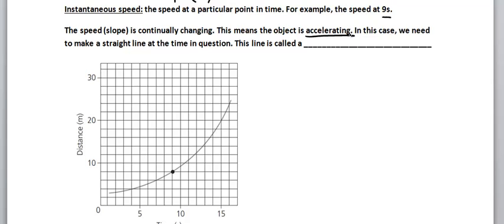Accelerating means the speed is changing. In this case, we need to make a straight line at the time in question. In other words, there is no straight line, so we need to make one. This line we're going to make is called a tangent line.